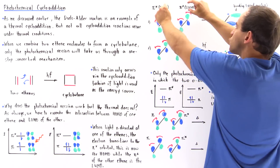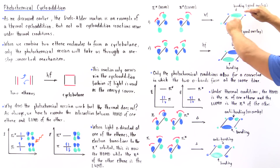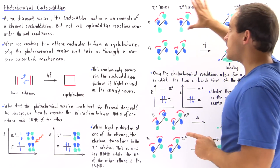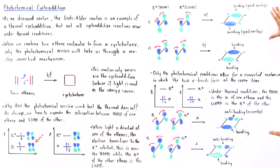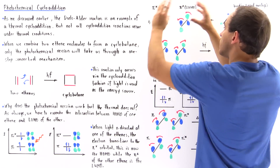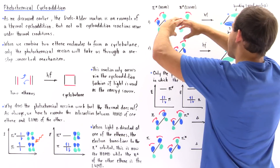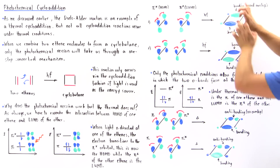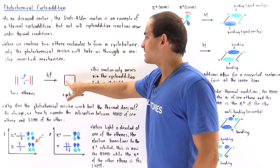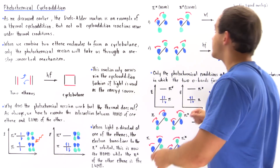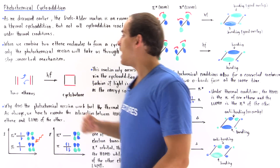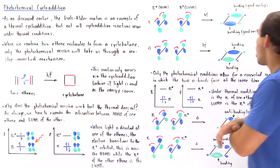At the same time, when this rotates the other way, the green lobes also rotate and overlap to form a bonding interaction — good overlap. So in this case, when rotation takes place in a single step, we form both sigma bonds at the same time that the two pi bonds are broken.